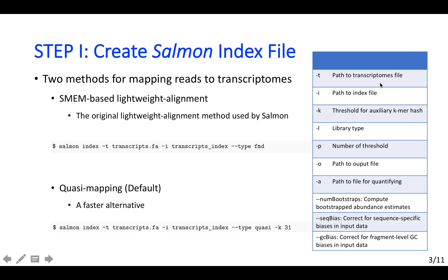Here, t identifies the path to the transcriptome files, i is the path to the index file, while k is the threshold for the auxiliary k-mer hash.